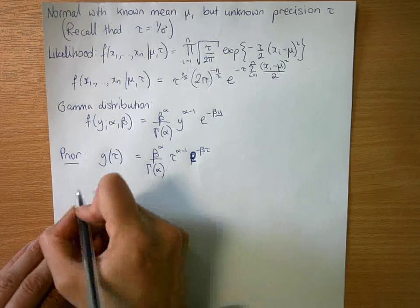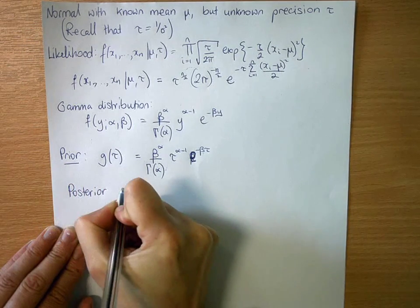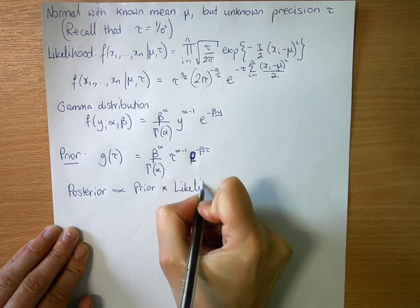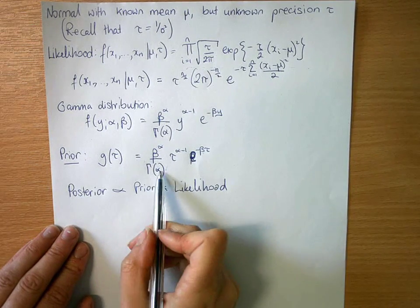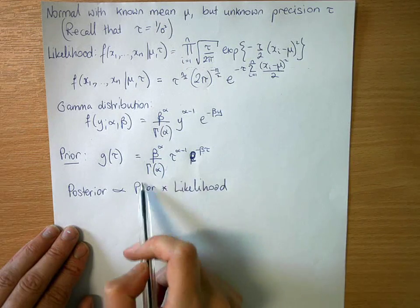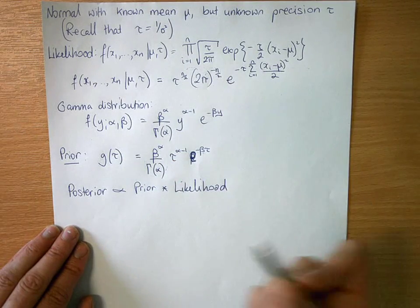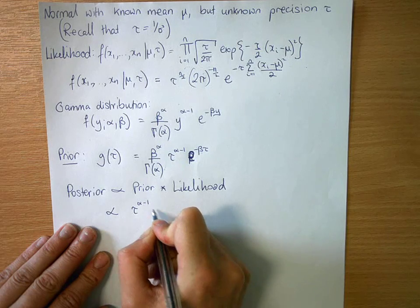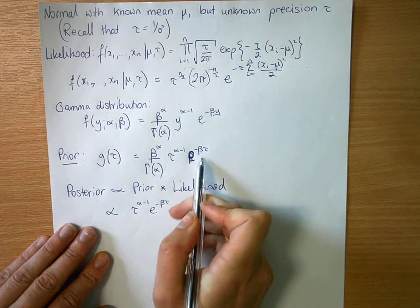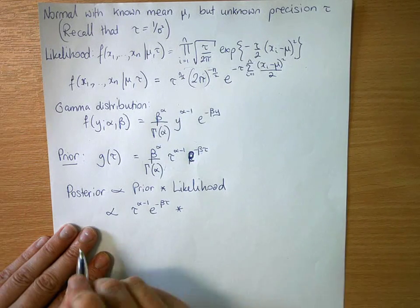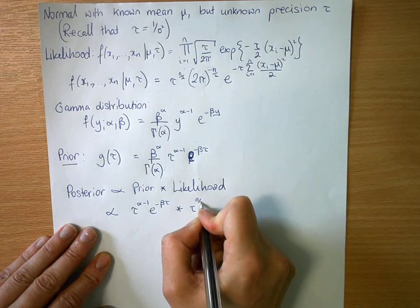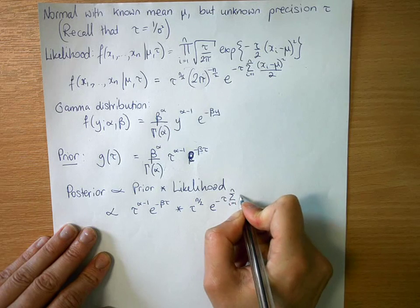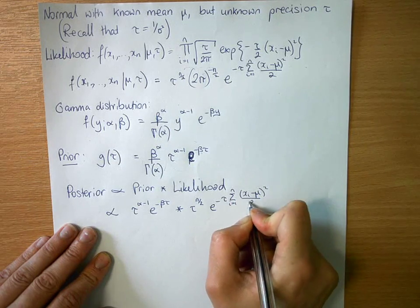So our posterior is proportional to the prior times likelihood. So because we're thinking about proportional in terms of tau, everything that doesn't depend on tau from up here, we're not going to bring into this calculation. So we're just going to say it's proportional to τ^(α-1) e^(-βτ). That comes from what we think might be a good prior, times τ^(n/2) e^(-τ Σ(xᵢ-μ)²/2).